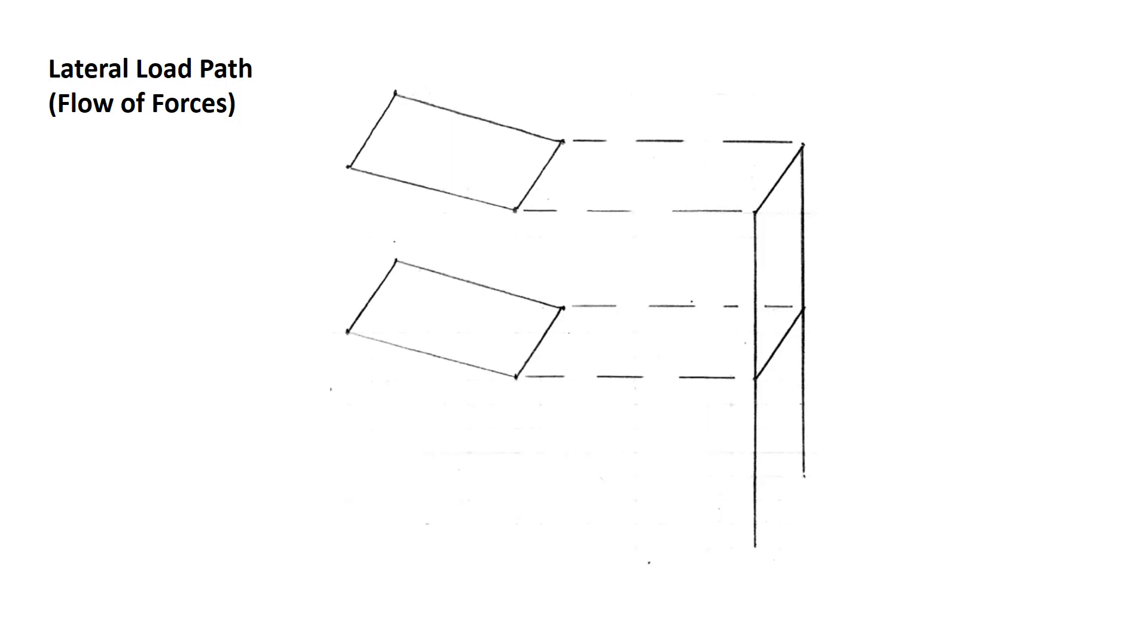What we're showing here is two diaphragms, and these diaphragms have been separated from the main lateral frame of the building. There should also be another frame on the other side, but I'm not showing that for clarity. The two elements here are the diaphragms. These would be the floors of the building, but when we're talking about the resistance to lateral earthquake forces, we refer to them as diaphragms.